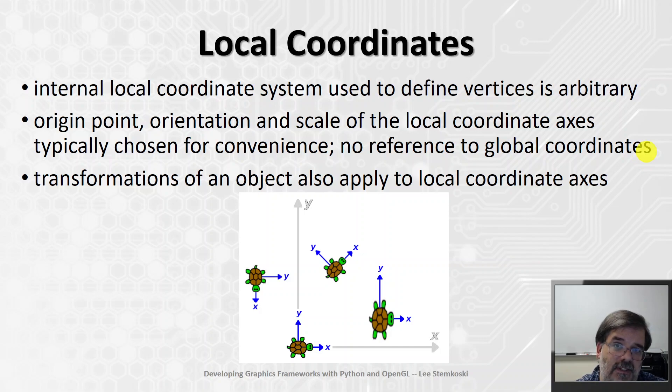And once you've defined something in terms of local coordinates, if you need to move it or resize it to a specific position or rotation or location in the scene, you can multiply it by transformation matrices, by global transformations. As you transform an object, you're also transforming its local coordinate system.